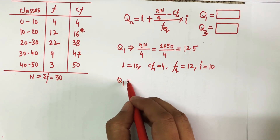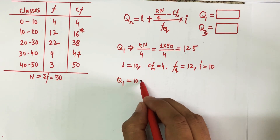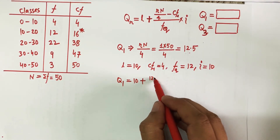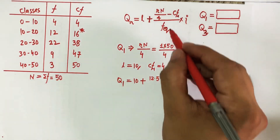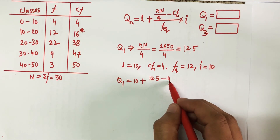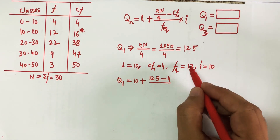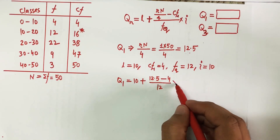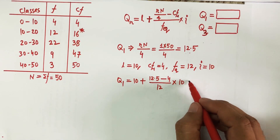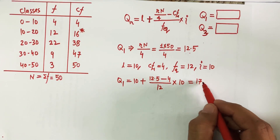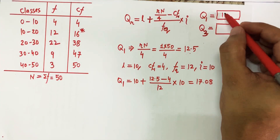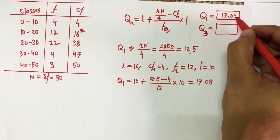Plugging the values in: Q1 = 10 + (12.5 − 4) / 12 × 10. This gives a value of 17.08. So my first quartile Q1 is 17.08.